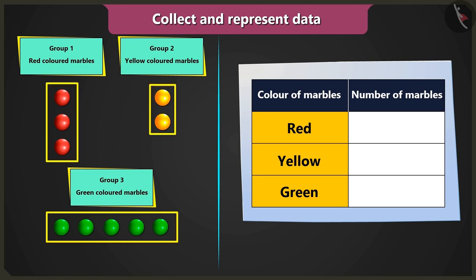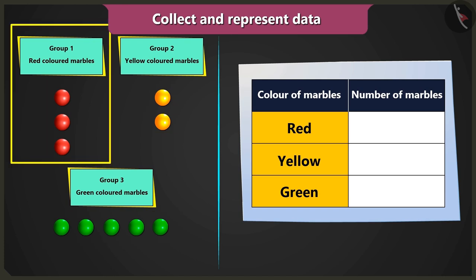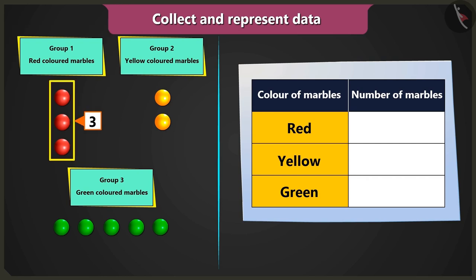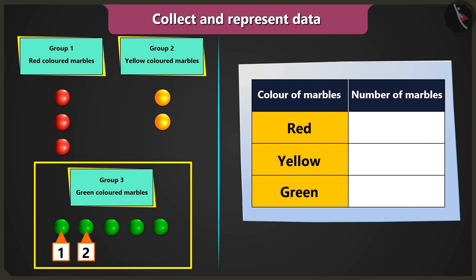What do we have to do next? Now we have to count the number of marbles in each group. There are one, two, and three red marbles in the first group. One and two, two yellow marbles in the second group.